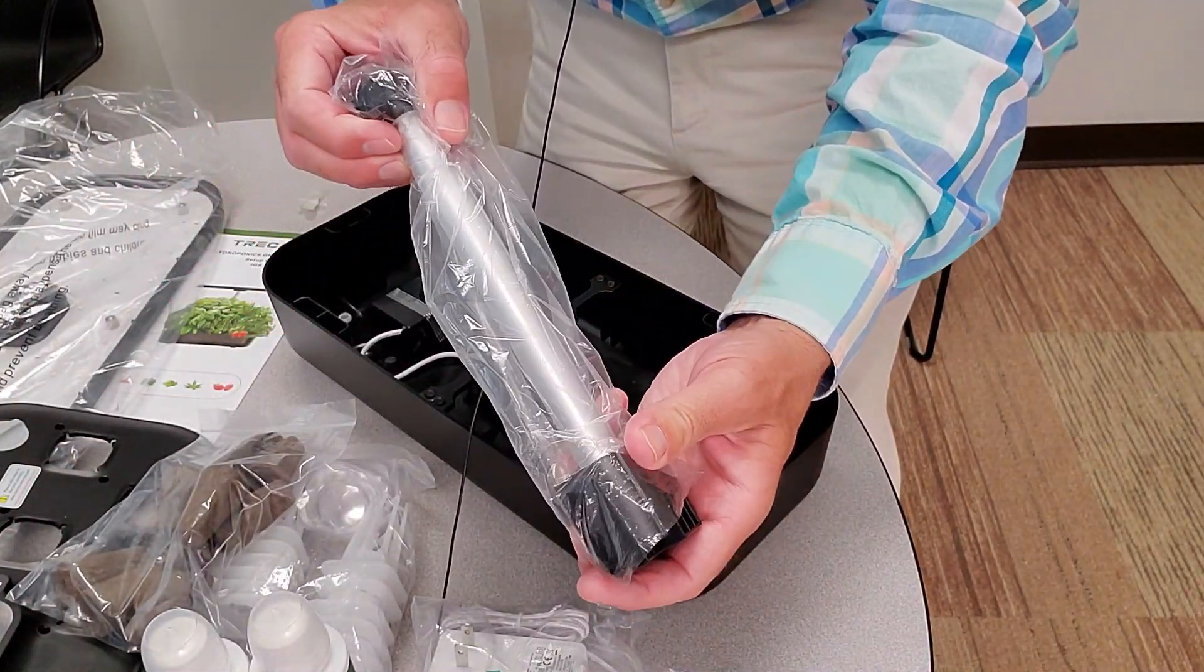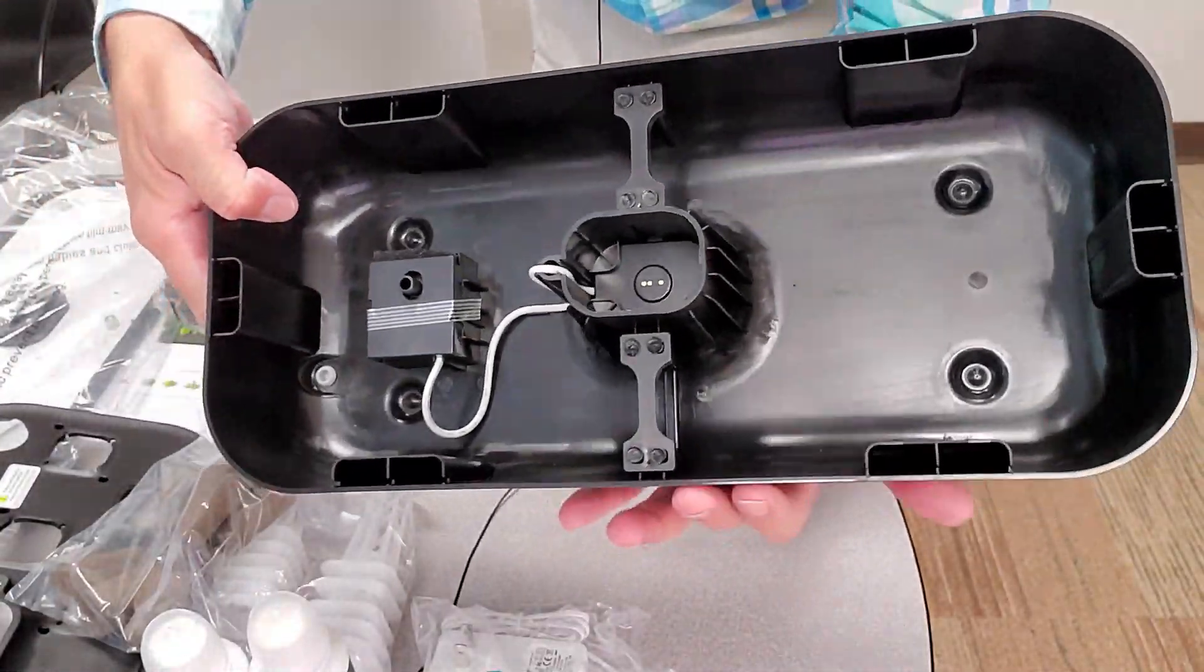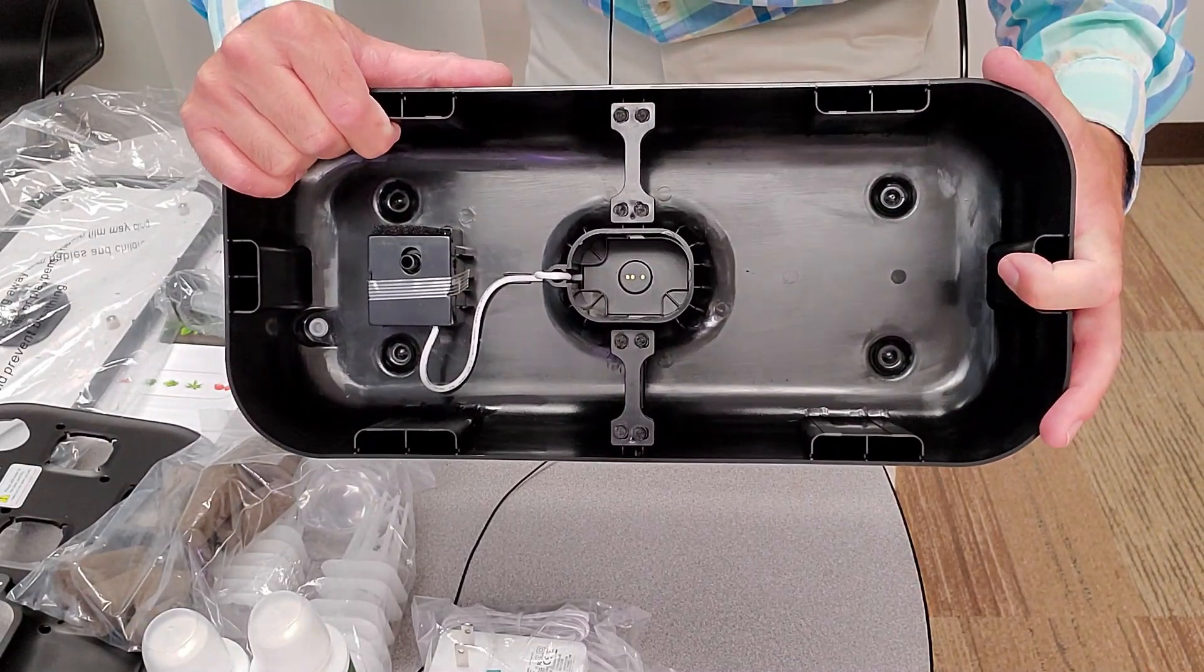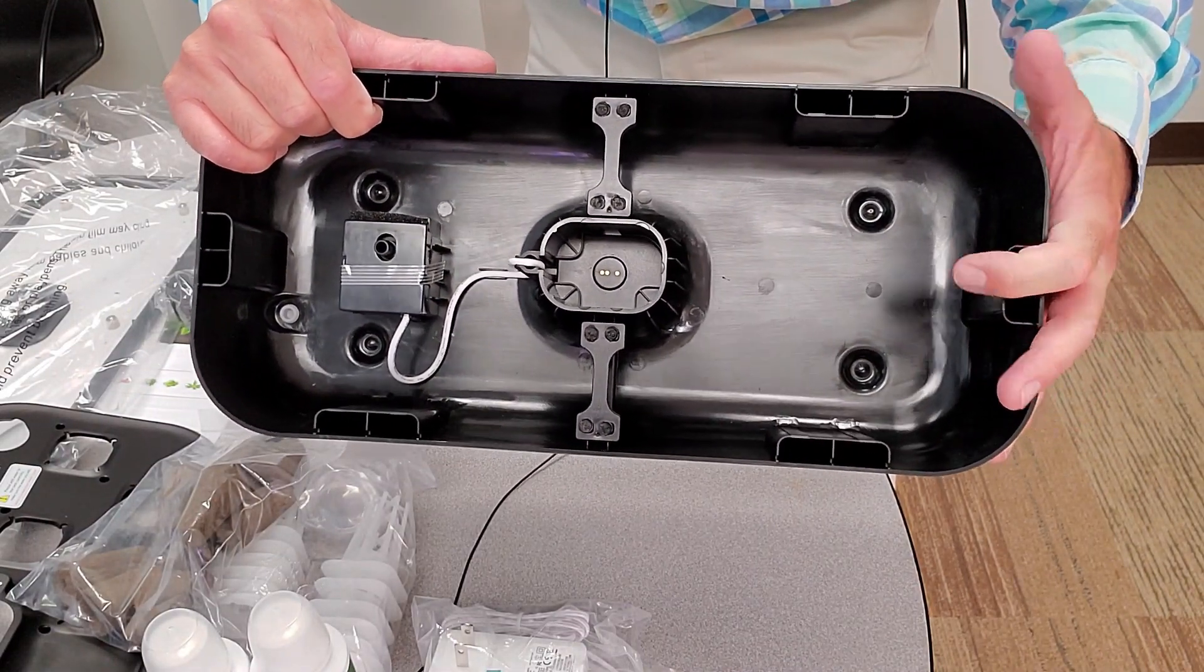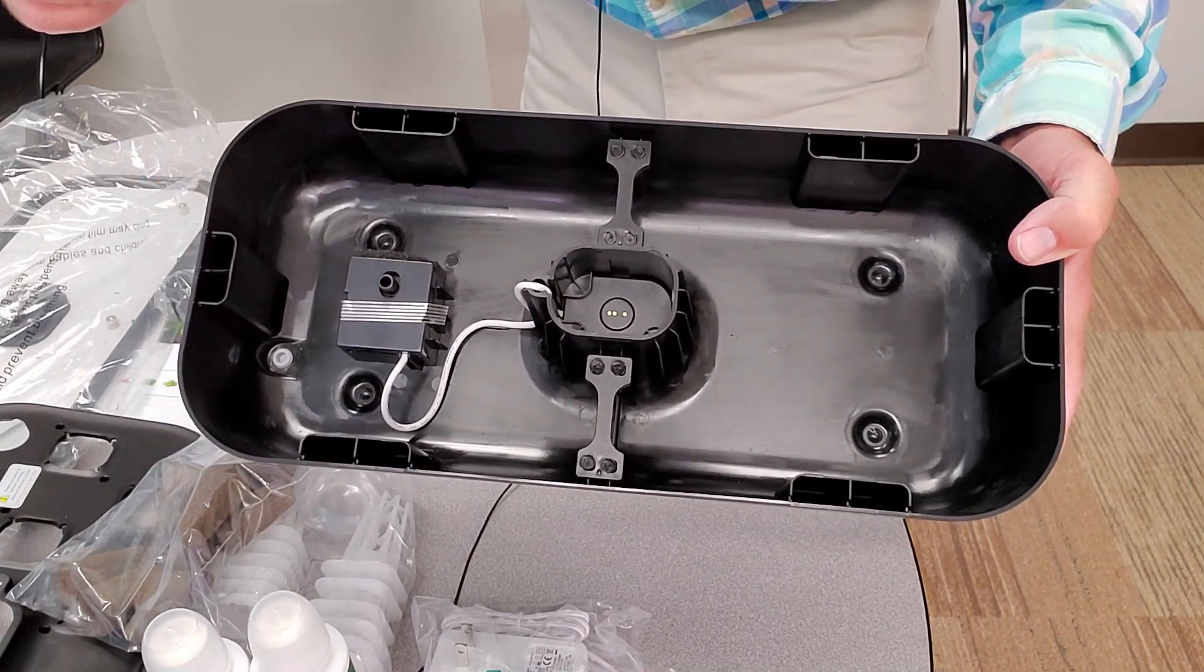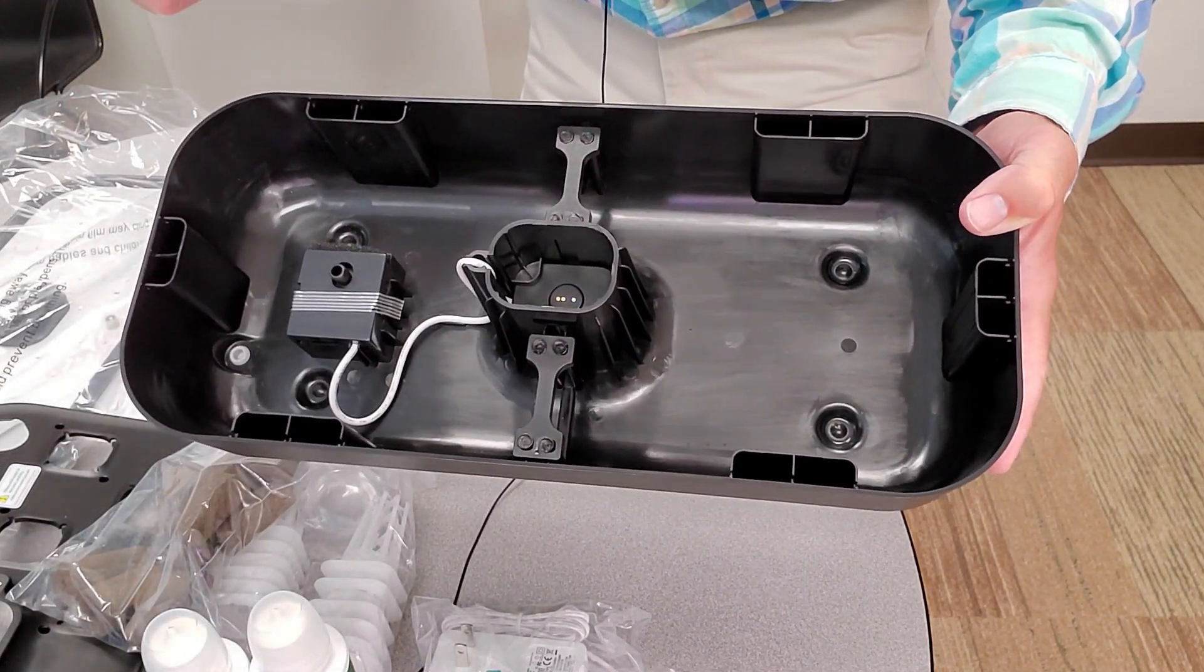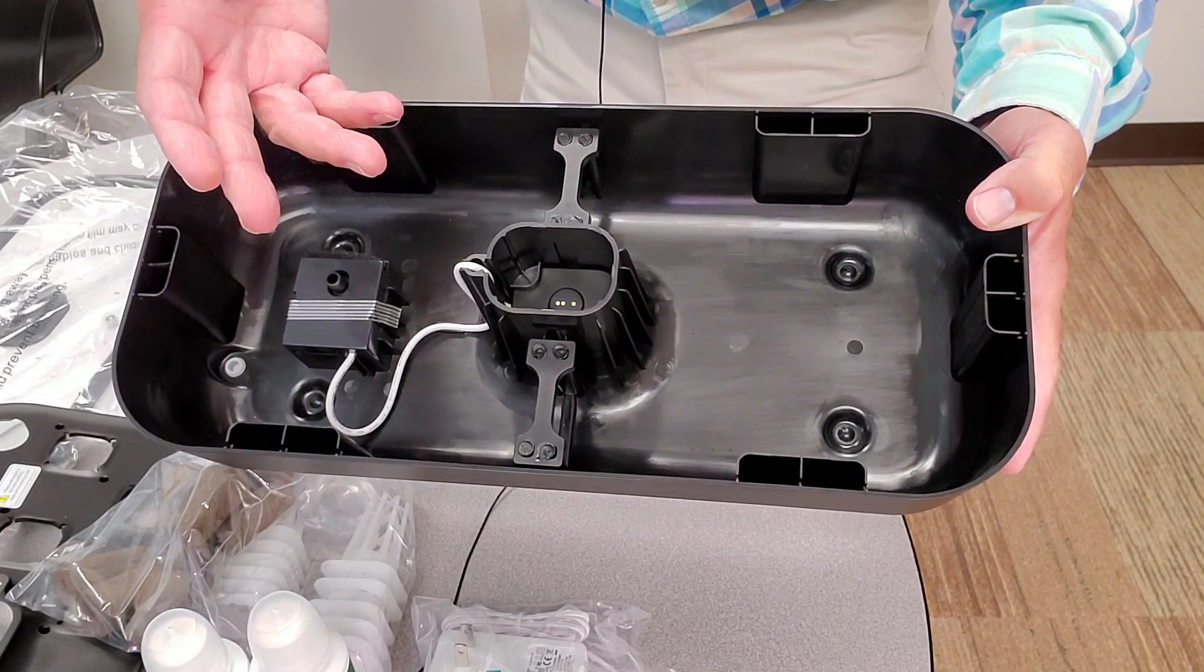If you look in the bottom of this container, one of the other things you'll notice is unlike a lot of the other products that are out on the market that do not include a pump, this unit does include a pump inside of it. The circulation of the nutrient solution will allow for better growth of your plants.